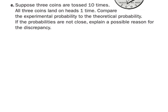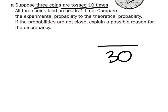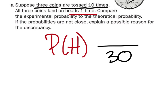For problem E, three coins are tossed — so this is experimental — ten times, giving us thirty total coin tosses. Each of the three coins lands on heads once, so that's three heads out of thirty, which simplifies down to one-tenth.